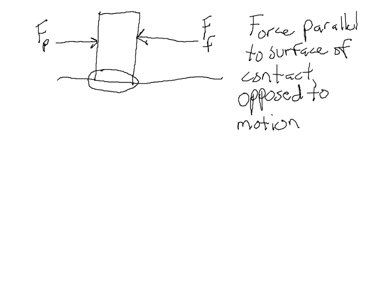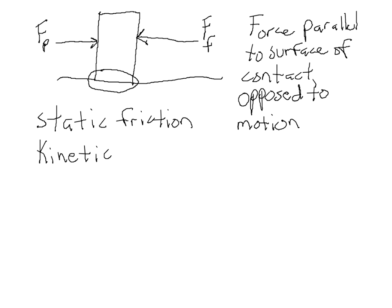If you push hard enough, eventually the filing cabinet will start to move in the direction that you're pushing. And when you start moving it, it gets a little bit easier to keep it going than it was to start pushing it in the first place. That's because there are two different kinds of friction involved. Before you move the filing cabinet, we have what we call static friction — that's the friction that keeps it from moving in the first place. Then after it starts sliding, we have what is called kinetic friction, which is the friction that works against the motion after it's already moving.